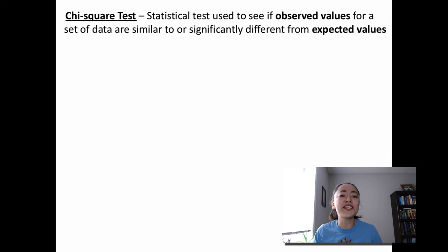A chi-squared test is a statistical test that can be used to see if observed values for a set of data are similar to or significantly different from expected values for that same set of data. Statistical tests are necessary because rarely do our observations match perfectly with our expectations. This discrepancy may be due to things such as random variation or experimental errors.